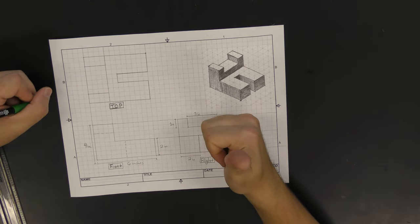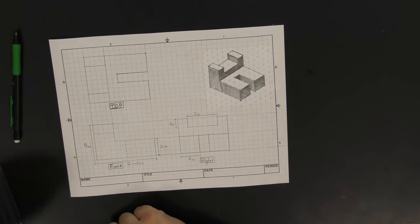And that's it. We have a fully completed multi-view drawing. So that's how we make a multi-view drawing. Ideally, you have your isometric sketch in the top right corner and you have your front, top, and right side views.